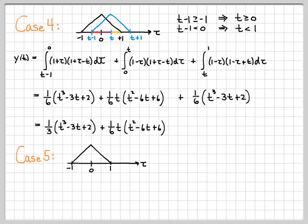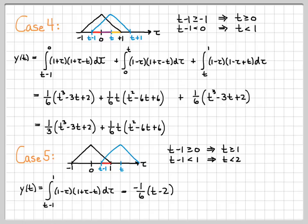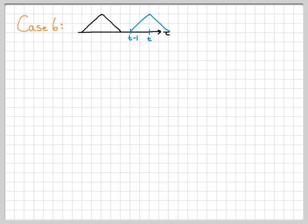Case five covers one ≤ t < two — we've almost slid completely past x of tau. There is only a small overlap region, so the integral runs from t minus one to one using the negative-sloped x of tau and the positive-sloped x of t minus tau. Integrating gives the result for case five. Case six is the trivial case when t minus one is greater than or equal to one, meaning t is greater than or equal to two — there is no overlap, so y of t equals zero.